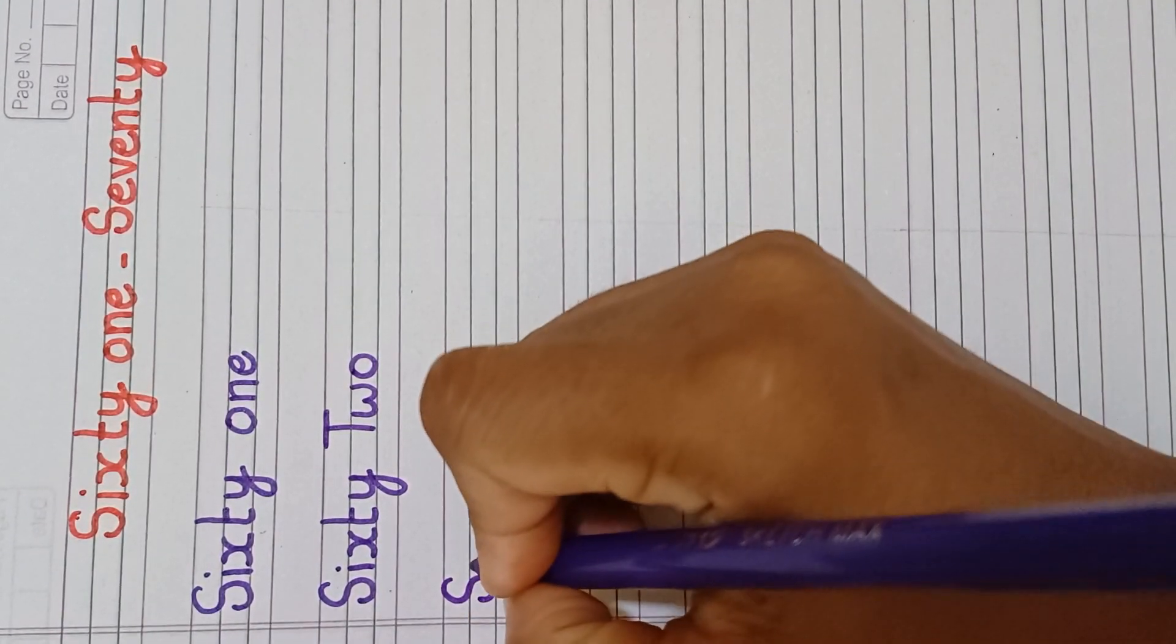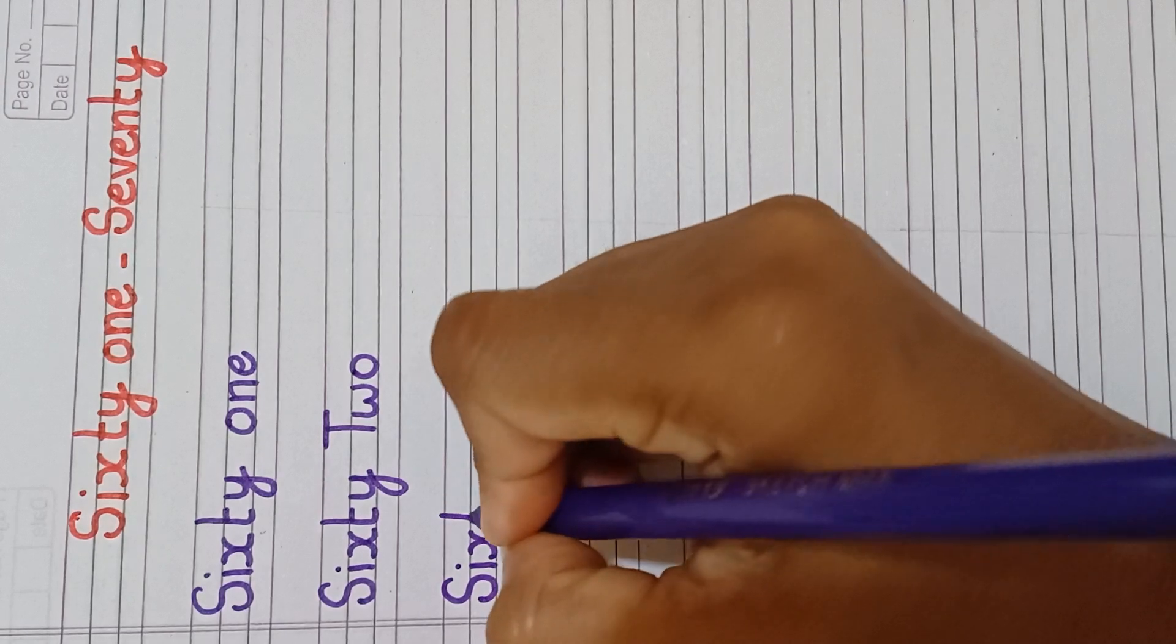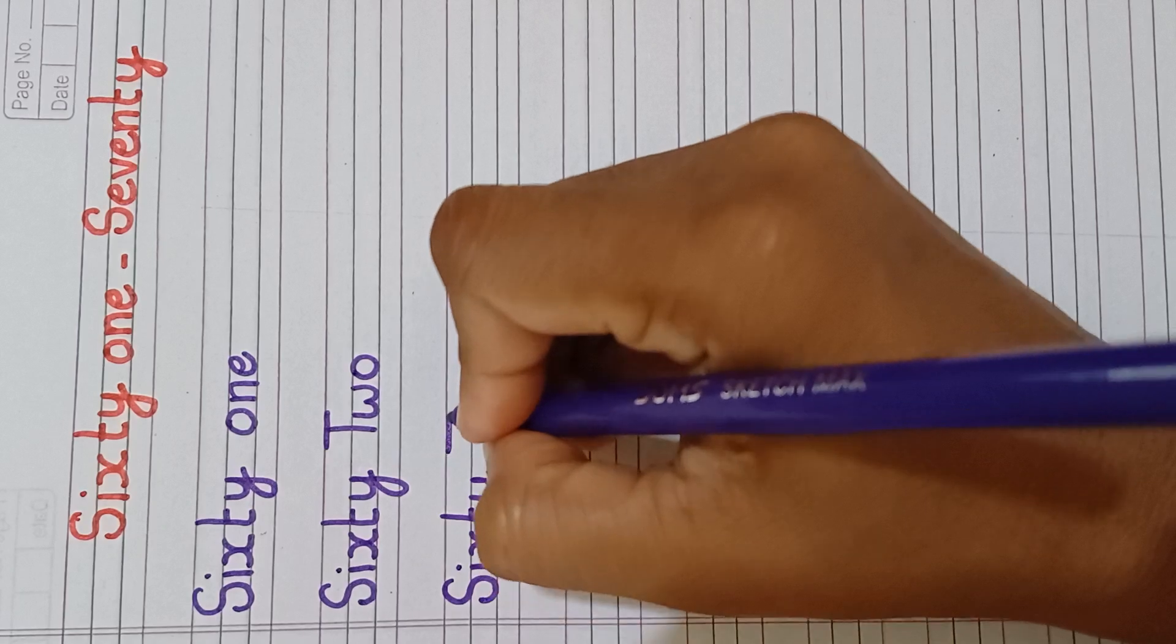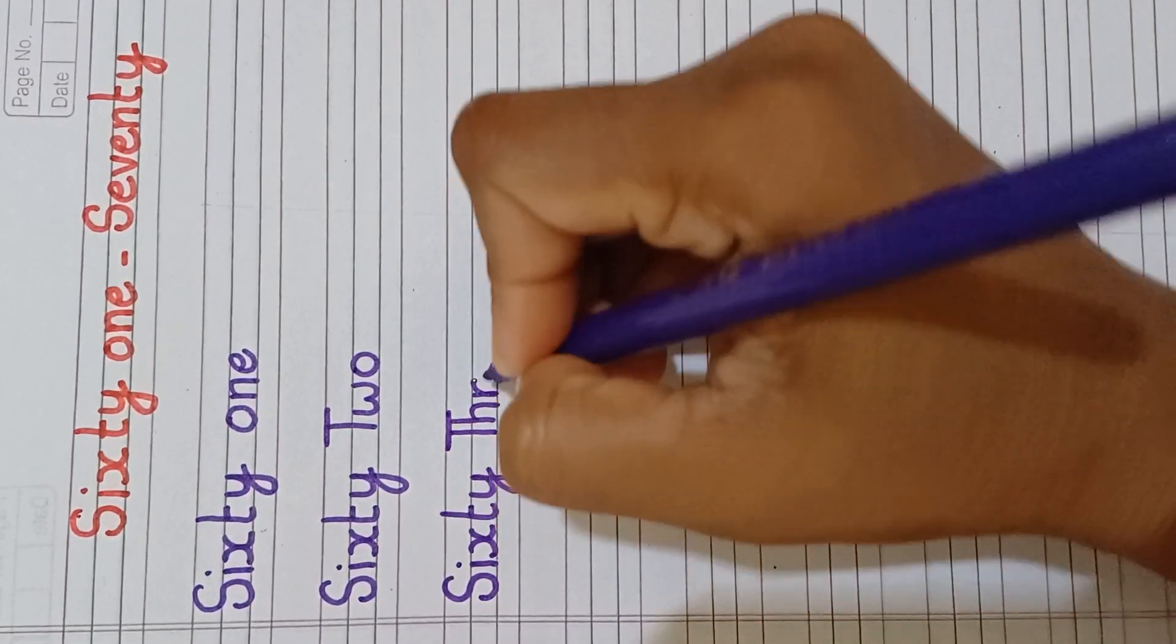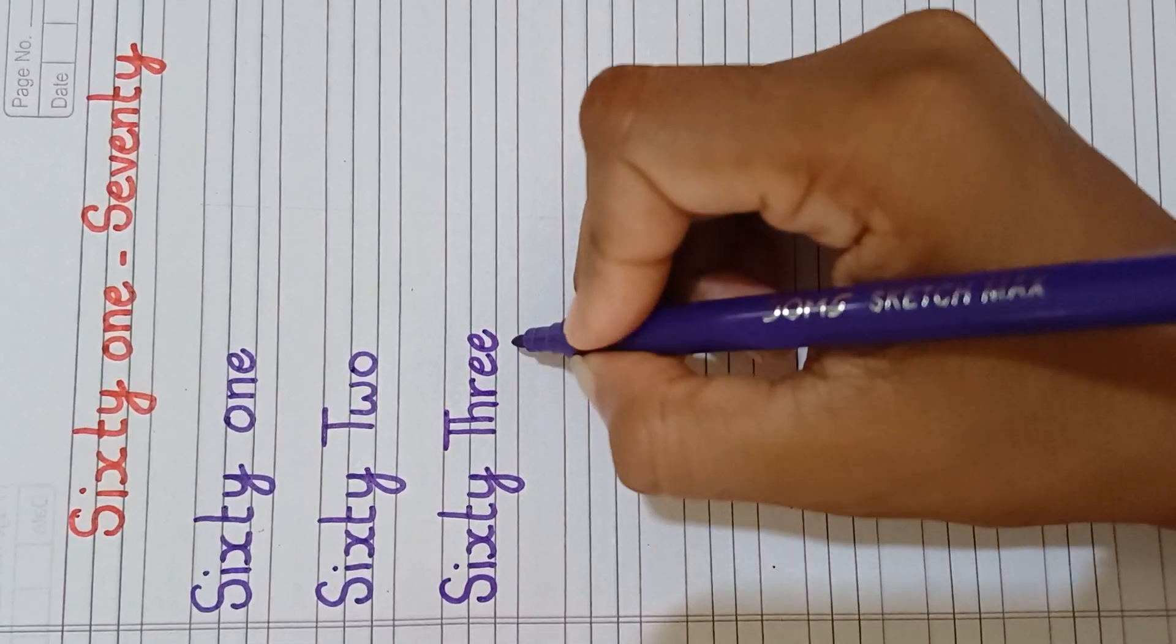S, I, X, T, Y, sixty. T, H, R, E, three. Sixty-three.